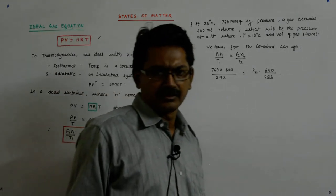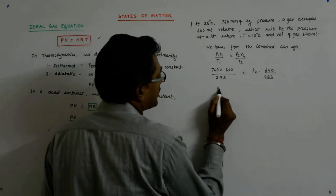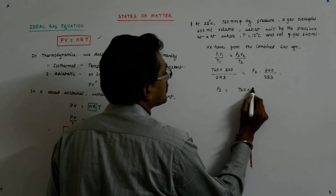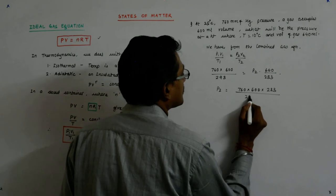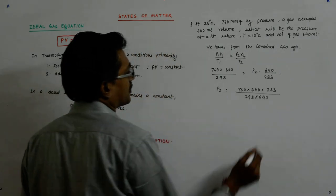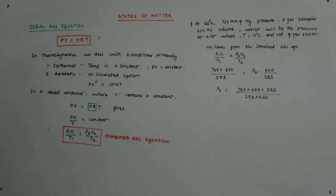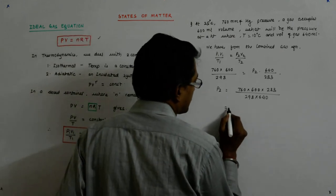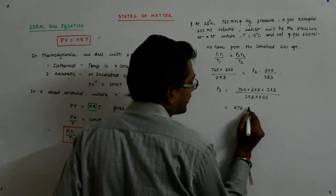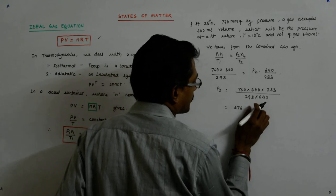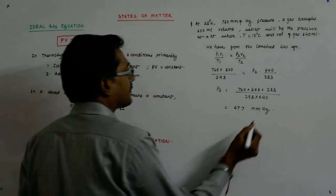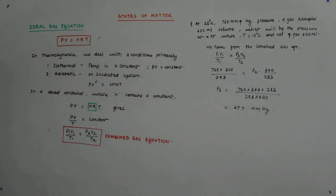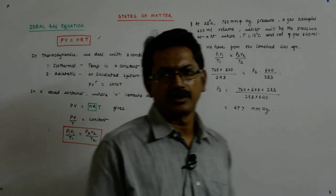So p2 becomes 760 × 600 × 283 / (298 × 640). That comes out to 676.65, so you may even call it 677 mmHg.